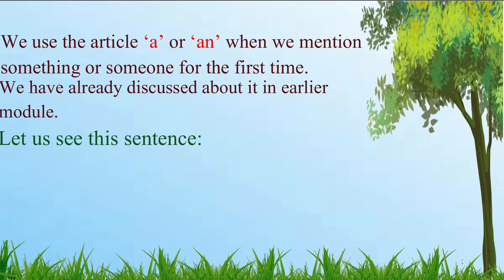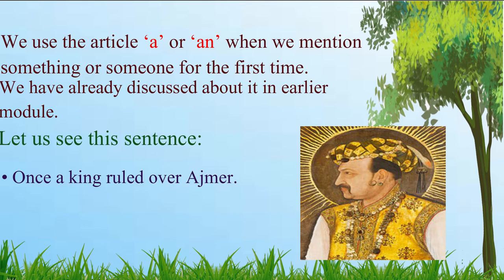Let us see the sentence: Once a king ruled over Achmir. In this sentence, the article a is used because we are introducing some king about whom we shall say something in the lines to come.